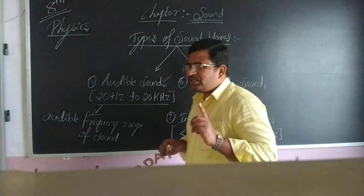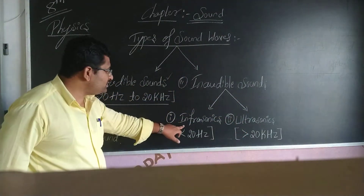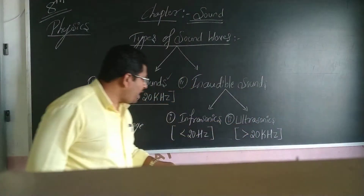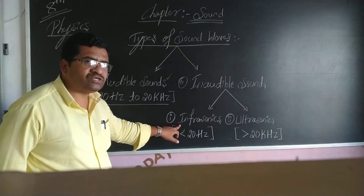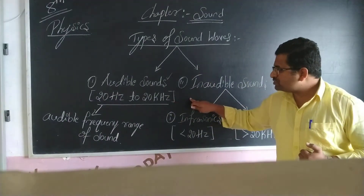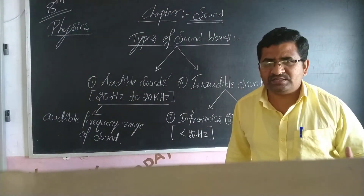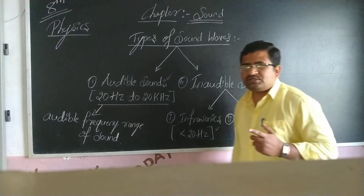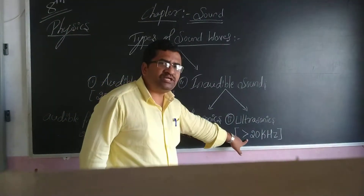Inaudible sound waves are again classified into two types. One is the infrasonic sound waves, and the next one is the ultrasonic sound waves. Infrasonics are the sound waves having a frequency lesser than 20 hertz. Ultrasonic sound waves are the sound waves of frequency greater than 20 kilohertz or 20,000 hertz.